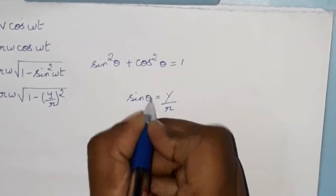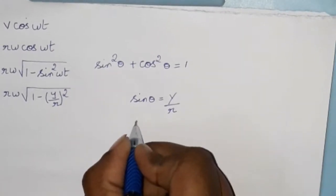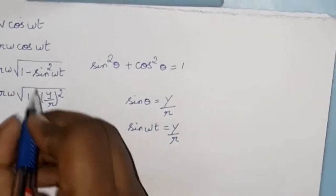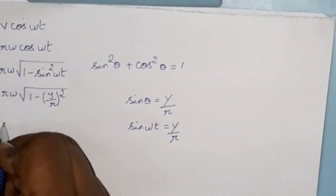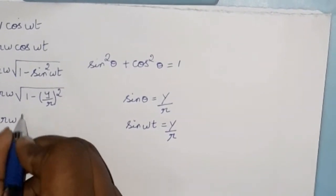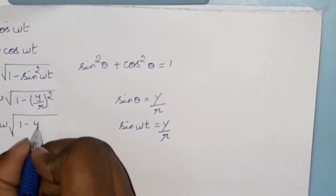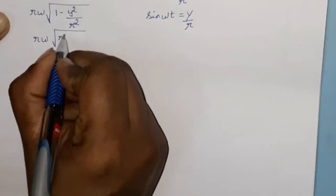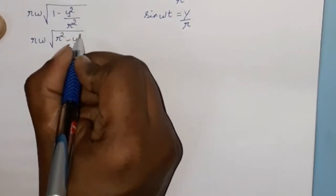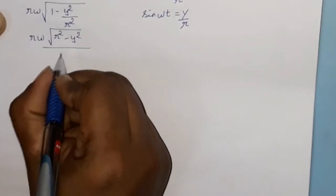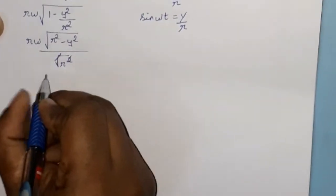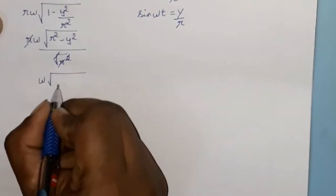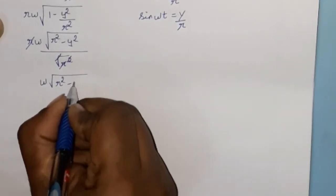Theta is nothing but omega t, and sin θ = sin(omega t) = y/r. So r omega root over 1 minus y²/r². Separating it, we get root over r² minus y². The square root cancelled and r cancels, giving omega root over r² minus y².